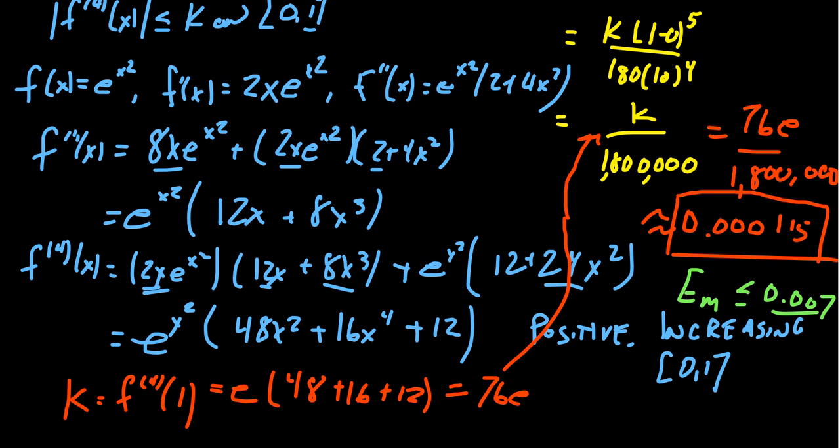Again, these are just error bounds. The error could be much smaller. But if you have the two options, I know that Simpson's rule, worst case scenario, is much better than the worst case scenario of the midpoint. So in practice, Simpson's rule is going to be the best method you're going to want to use in these calculations.